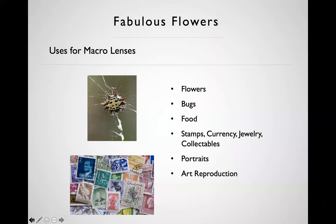What do we do with macro lenses? Overwhelmingly the number one answer is flowers, and bugs are a close second. Beyond those, food photography with a bit of close-focus capability is very appropriate. Stamps, coins, collectibles — documenting a hallmark or serial number — are all great uses for macro as well.